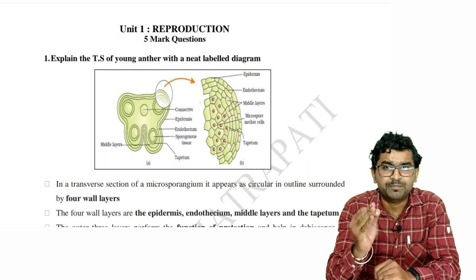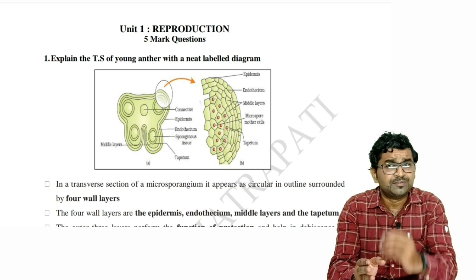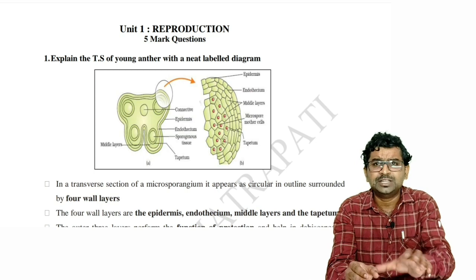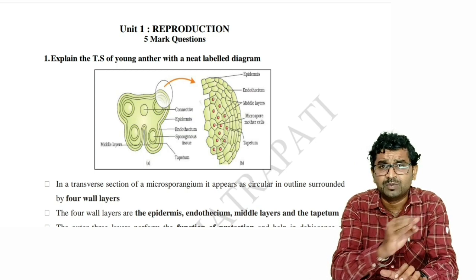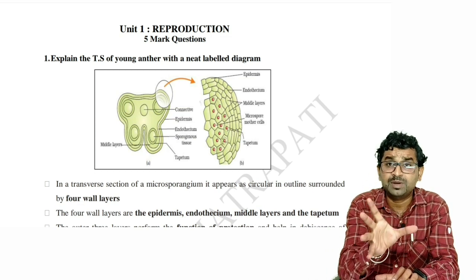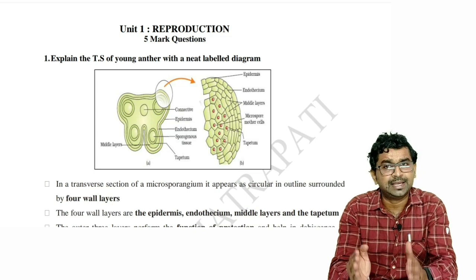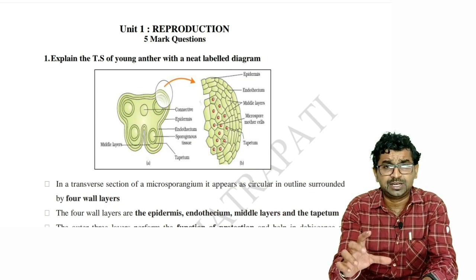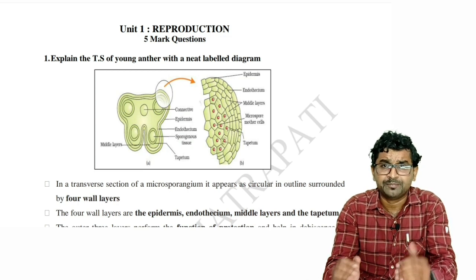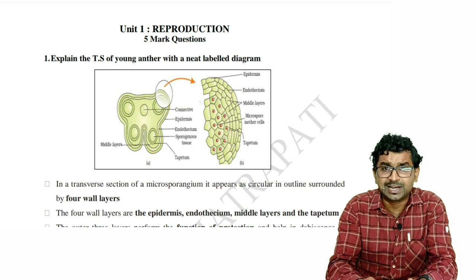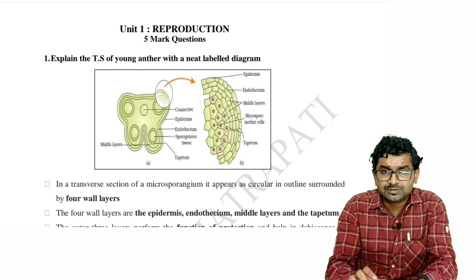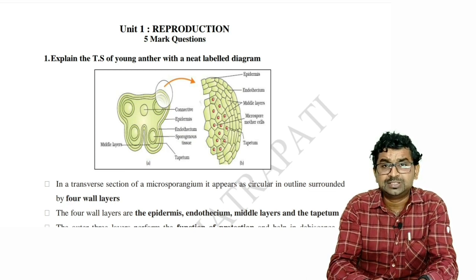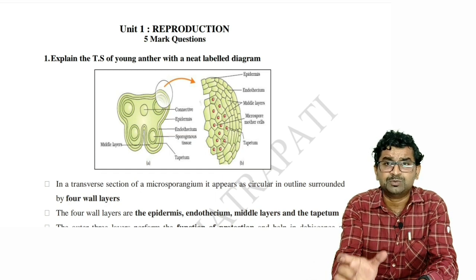Always draw the diagram first — because it is a rule. Don't be focused only on writing the points. Just direct it. Whatever points you know, first put a neat labeled diagram — visible, clear. As you can see on the screen, place the diagram clearly in the center. Students, they will just put only one part — an incomplete diagram of microsporogenesis or the young anther diagram. Don't do that. This diagram is a screenshot from the NCERT textbook.